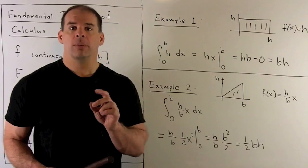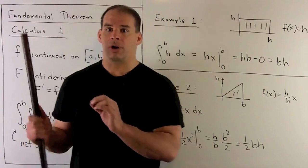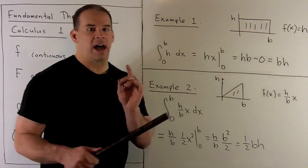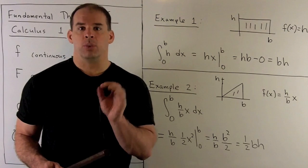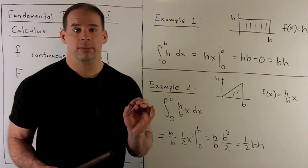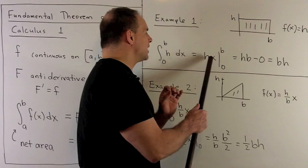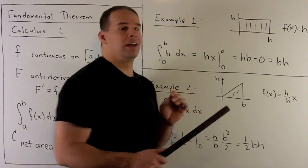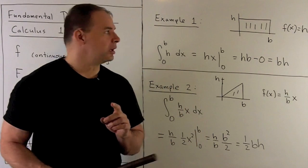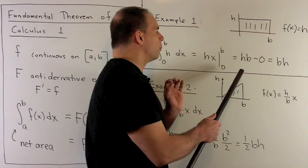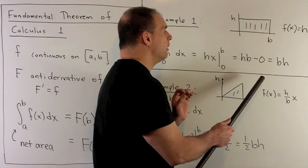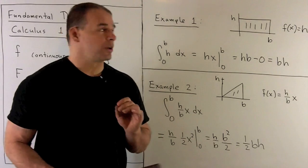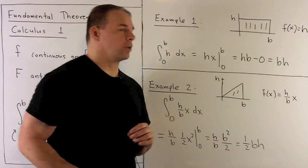If we work out the definite integral using our theorem: if I take the antiderivative of constant h, we just attach an x to it, giving us h times x. We evaluate at b and zero and take the difference: h times b minus zero equals b times h. This agrees with our formula for the area of a rectangle.